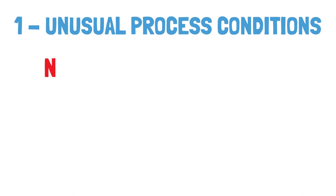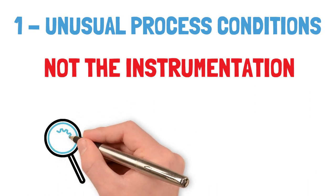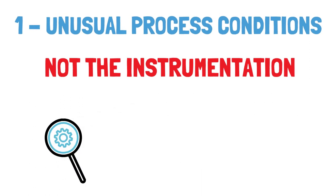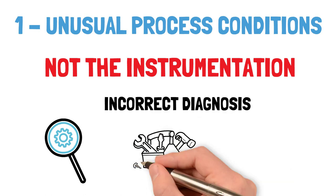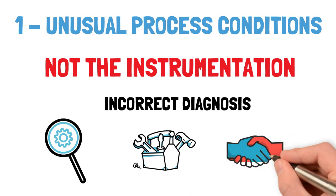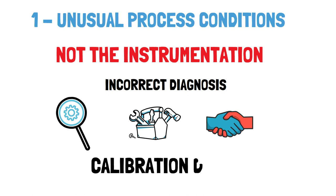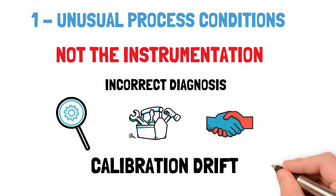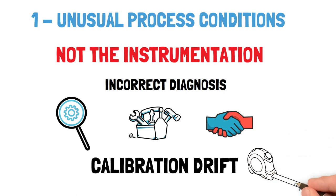Unusual or unexpected process conditions. As you will find out as an instrument technician, often a reported instrument failure isn't a failure at all. Unusual process conditions such as higher or lower pressures or levels may lead an operator to report a fault — you will often test the instrumentation to find it is operating correctly and that the problem is process related. Always try to work with your plant operators to discount any unusual process conditions before diving into fault finding. Other times, calibration drift of the instrument might be causing the unexpected readings. If this is suspected, calibrating the equipment either in situ or back at the workshop with calibrated test equipment will help restore trust in the instrument reading.